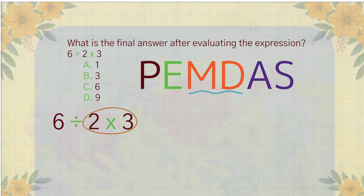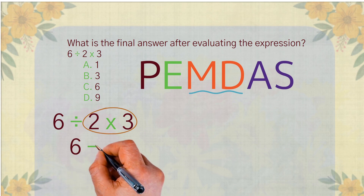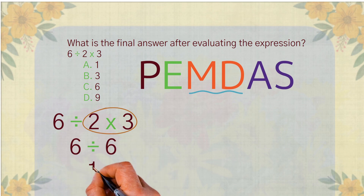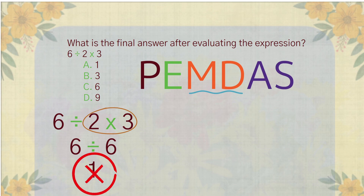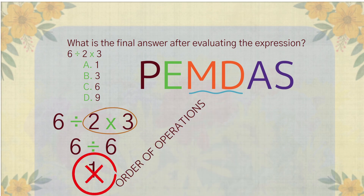So they multiply 2 by 3, which gives them 6. Then they divide 6 by 6 and get 1. But that's wrong. This happens because they incorrectly applied the order of operations, doing multiplication first instead of reading it from left to right.